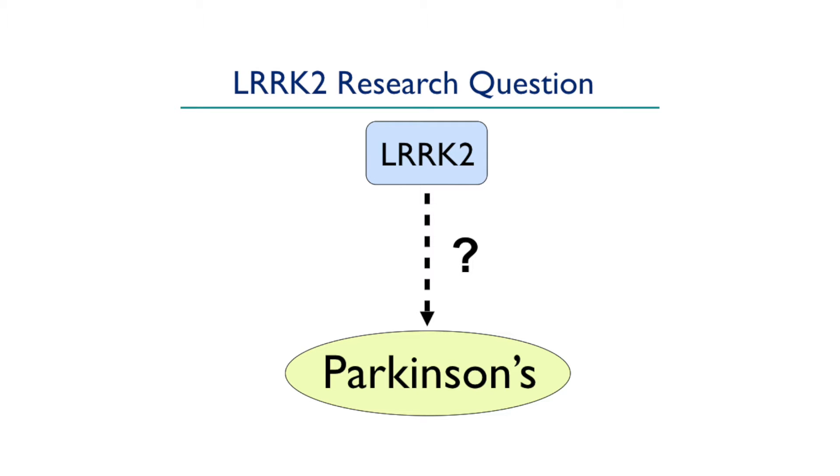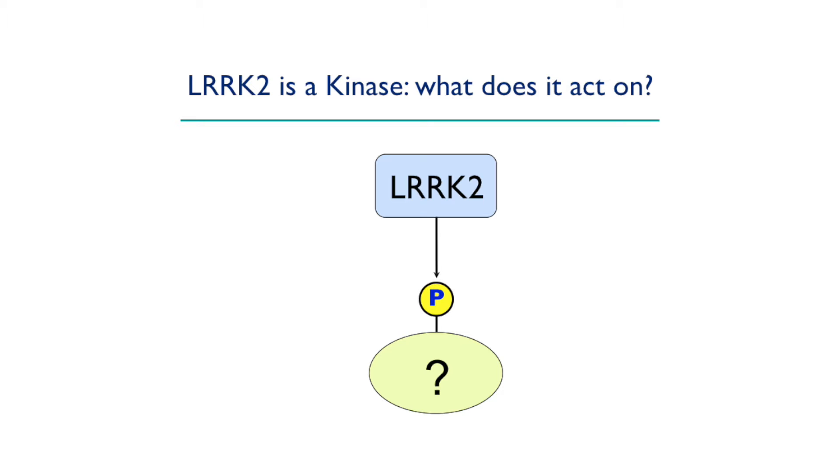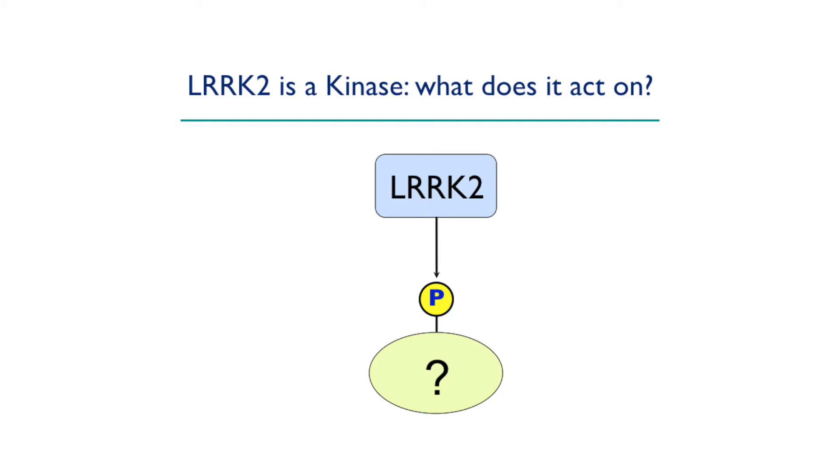The key question for us and everyone working in this field is: what is the biology that LRRK2 is regulating to cause Parkinson's disease? For a kinase, that means identifying the key direct substrate that LRRK2 is targeting to trigger the disease. Everybody knew this in 2004, and hundreds of labs were working to identify this key substrate. It turned out to be very, very difficult — we used all the tricks in the book and just couldn't crack the problem.